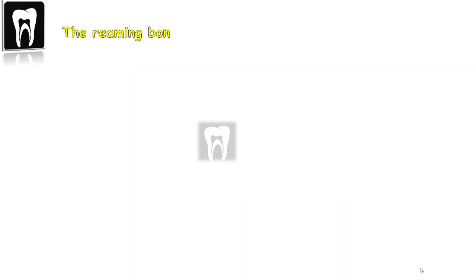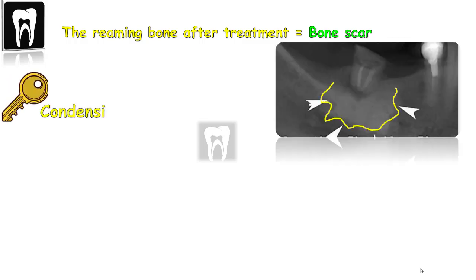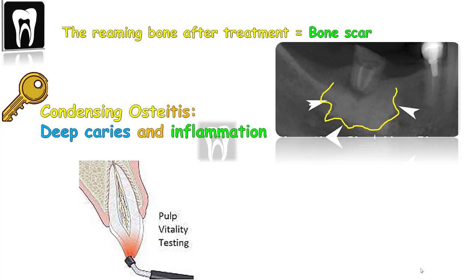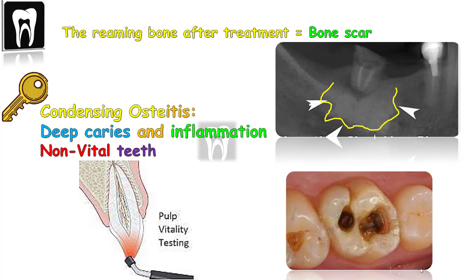The sclerotic bone may even remain after the treatment of the inflammation and is termed osteosclerosis or bone scar. The key takeaway is that condensing osteitis is only associated with pulpal inflammation, while the other apical radiopaque lesions are associated with vital teeth. That is a very important hint.